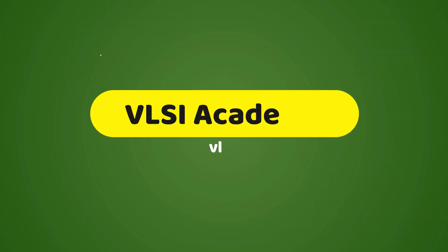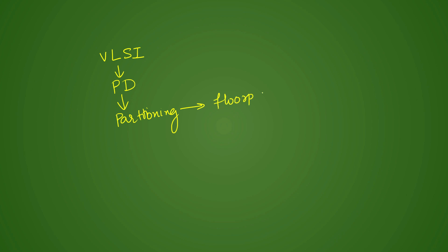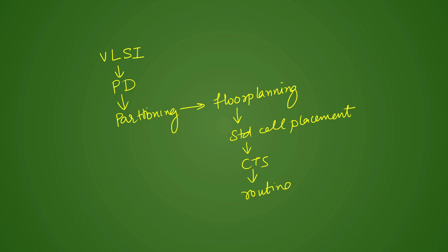Just for a basic overview, in the entire VLSI spectrum there are a lot of fields and physical design is just one of them. Inside PD, we do partitioning first, then floor planning, then standard cell placement. Then we do CTS. Power planning, where power stripes come from the top metal layer to the bottom standard cell rail, is already done in the floor planning stage, and then only we start doing standard cell placement.